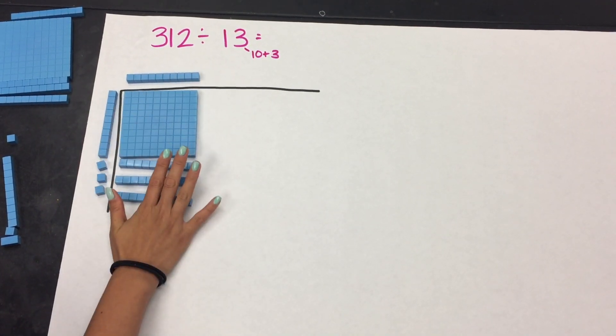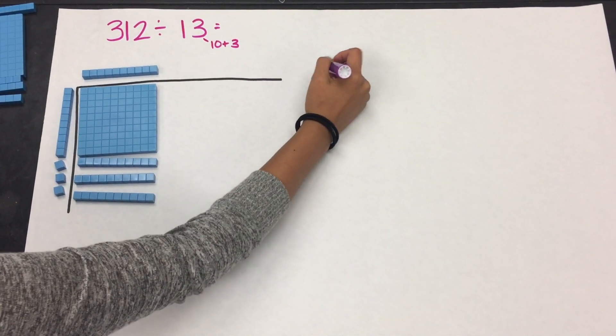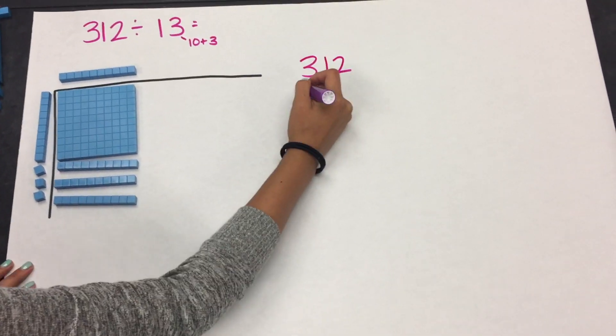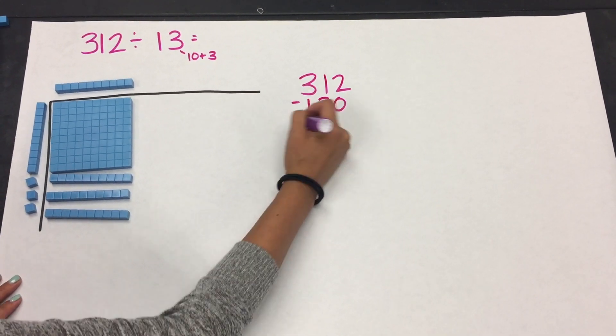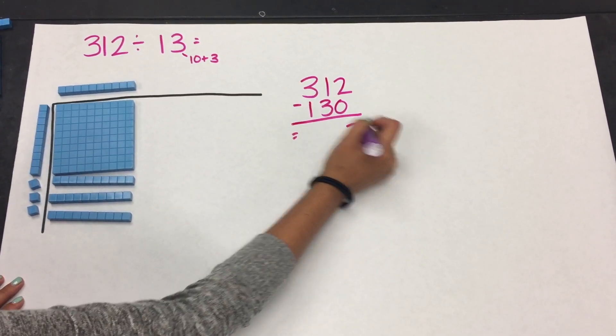So far in the inside of my rectangle, I have 130. So I'm going to keep track of what is in my inside with subtraction on this side.